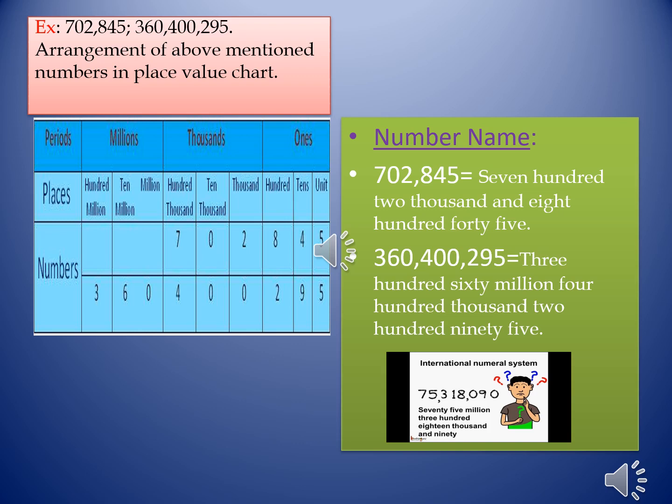Now read the number name: 702,445. Another example: 360,400,295 — we read the number name as three hundred sixty million, four hundred thousand, two hundred ninety-five.